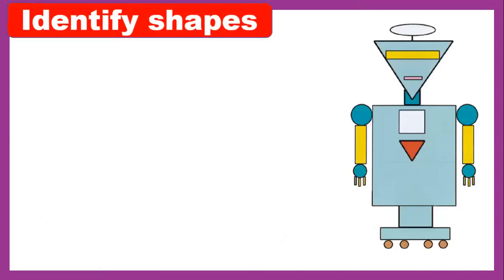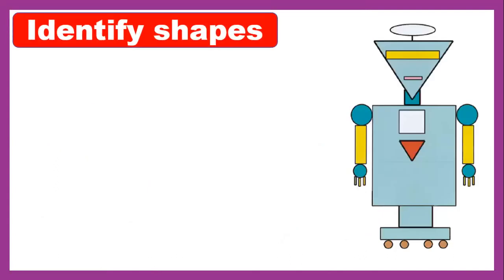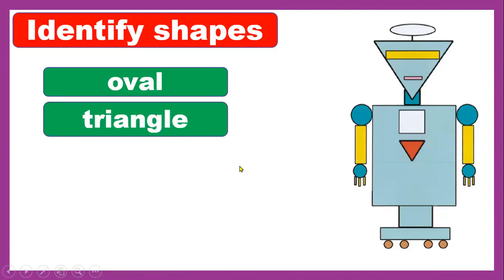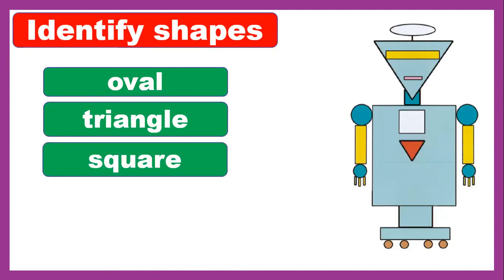We practiced identifying shapes. First one is oval, so you need to count how many ovals in this robot. There is one oval that looks like an egg. How many triangles? There are only two triangles: number one, the red one, and number two. And square, there is only one square.